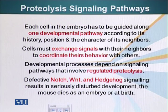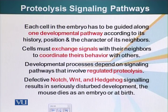Cells have to exchange signals with their neighbors to coordinate their behavior. If a cell has decided it is going to become a nerve cell, it should tell other cells not to develop into a nerve cell because it is going to develop into one. So how do cells manage that?